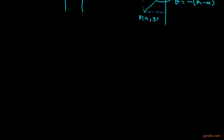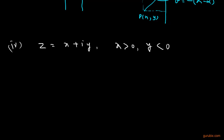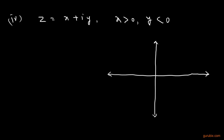Let us move to the last part, the fourth case. Suppose we are given a complex number z = x + iy, where x is positive and y is negative. This complex number lies in the fourth quadrant of the Argand plane. Suppose this is point P representing x + iy, and this angle is alpha. In this condition, θ equals minus alpha.